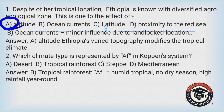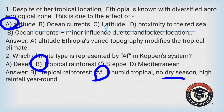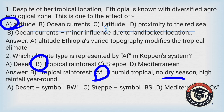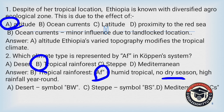Tropical rainforest is represented by 'Af' in Koppen's climate classification system. This covers humid tropical areas with no dry season and high rainfall year-round, so B is the correct answer. Desert is represented by 'BW', steppe by 'BS', and Mediterranean climate by 'Cs'. The correct answer is B.